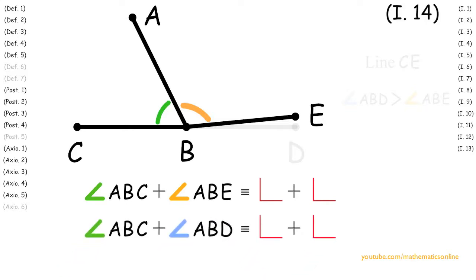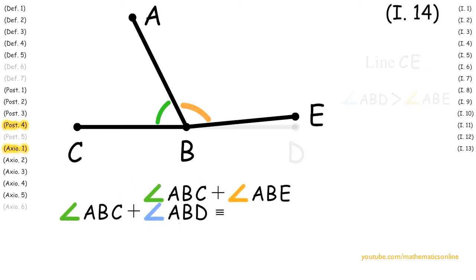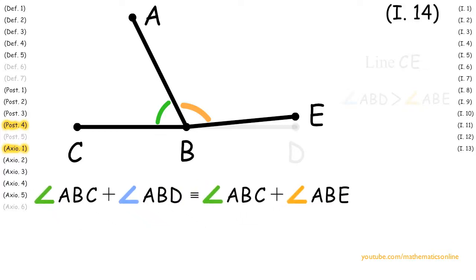Since we also have angle ABC plus angle ABD congruent to the sum of two right angles, then by Axiom 1 and Postulate 4, angle ABC plus angle ABD is congruent to angle ABC plus angle ABE.